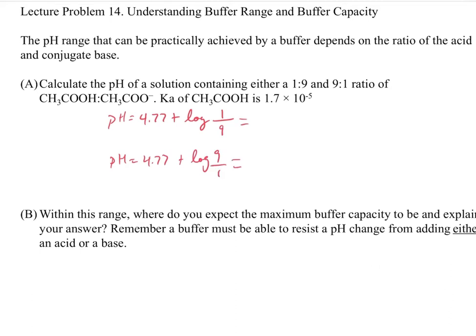And so basically what we're doing is we're saying, what would happen, what would be the pH range if you were to have 9 times more conjugate acid, if you were to have 90% conjugate base and 10% conjugate acid or vice versa,